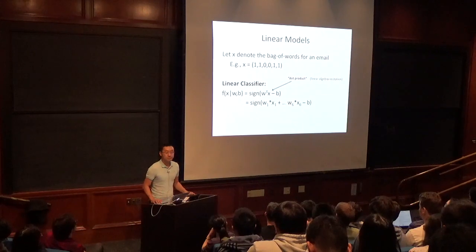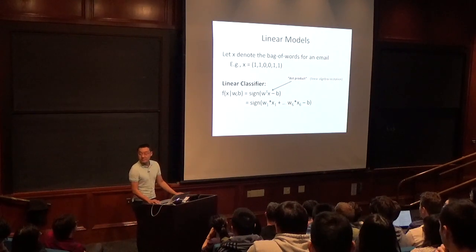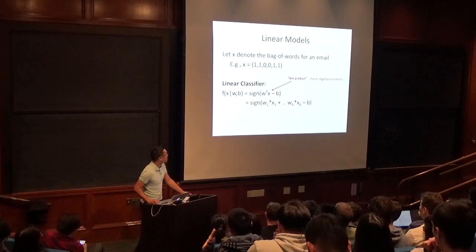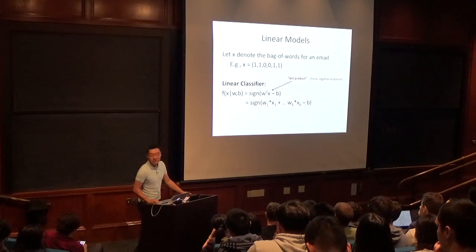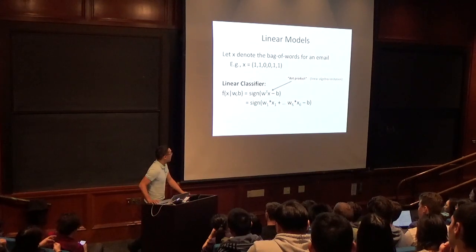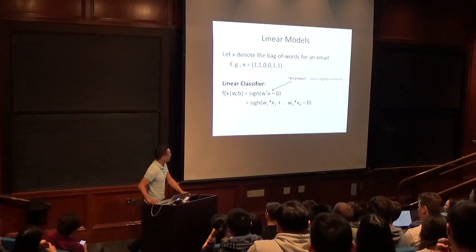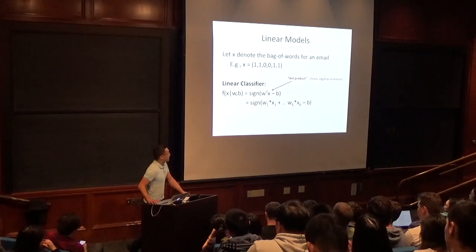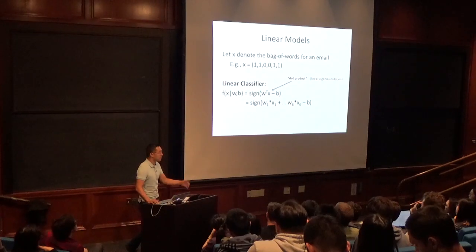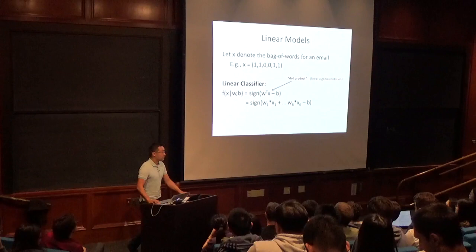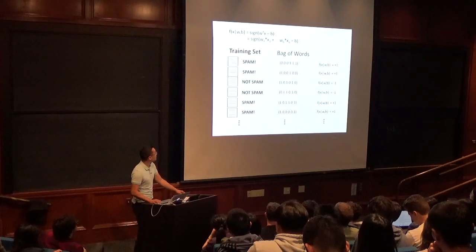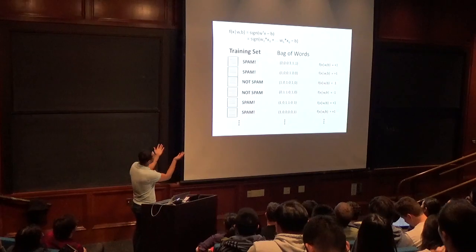Student question: do we assume sign of 0 is 0? In this paradigm, we typically don't assume the value inside the sign function is exactly 0 after learning a model. Technically yes, sign of 0 is 0, but in practice that basically doesn't happen — after the model is learned, the value is always either greater than or less than 0.